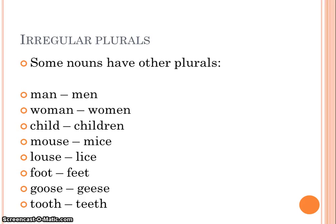Further irregular plurals: child/children, mouse/mice, louse/lice, foot/feet, goose/geese, and tooth/teeth.